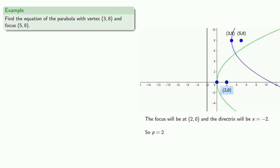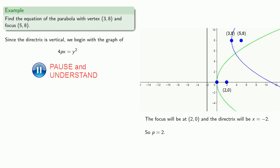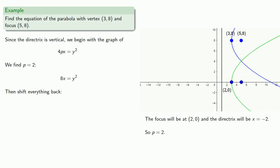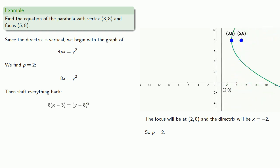Since the directrix is vertical, we begin with the graph of 4px equals y squared. With p equal to 2, we shift everything back into place: right 3 units, then up 8 units. That gives us our final equation.